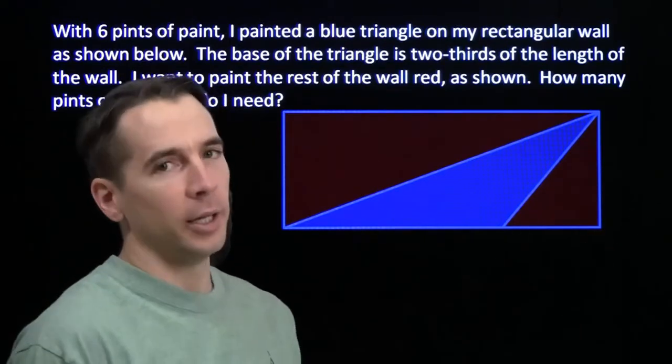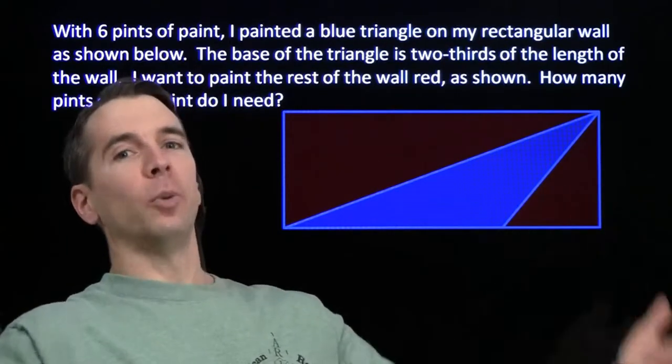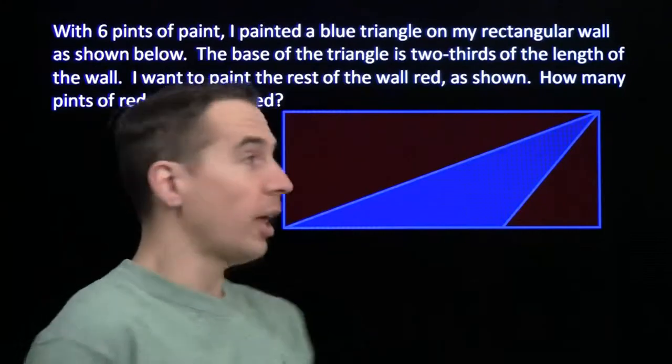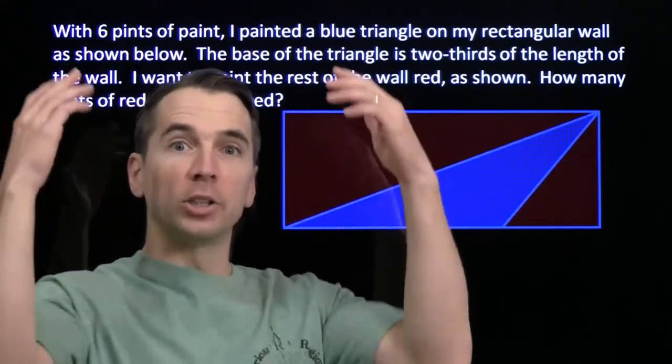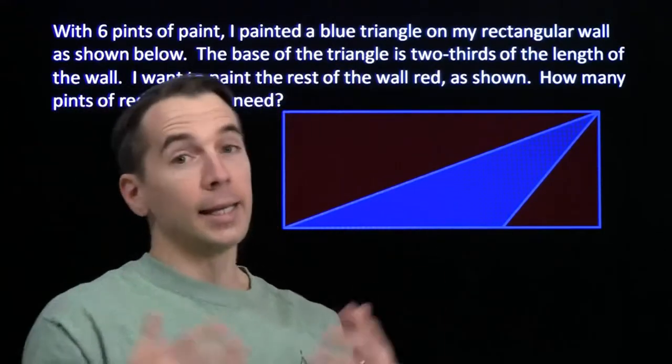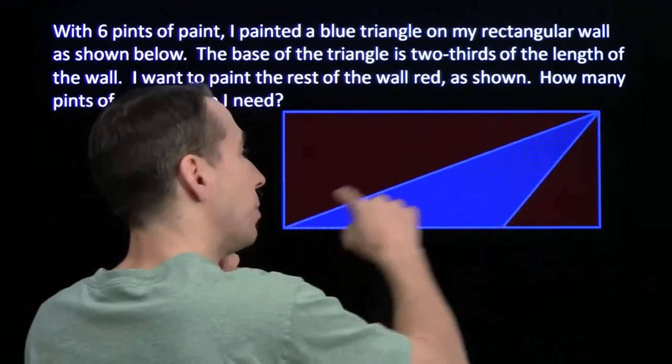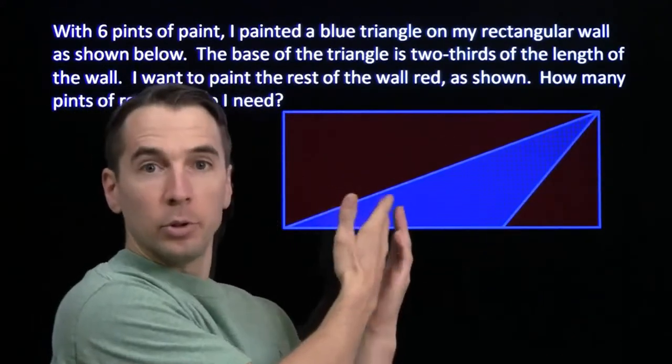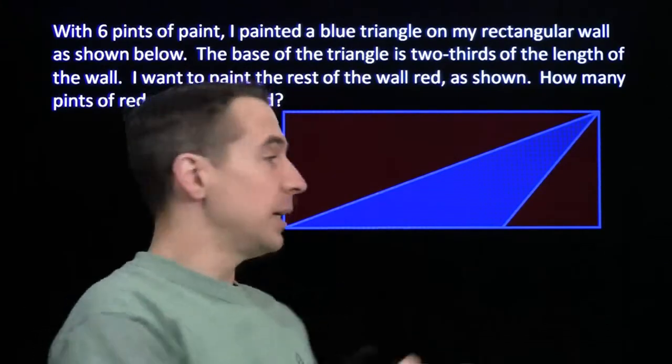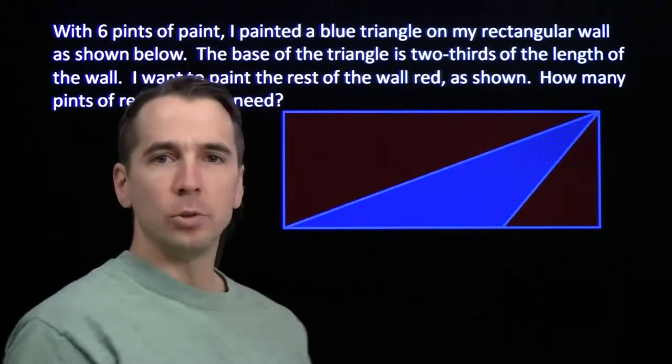Each time I needed a new pint, I went and bought another one. That's a ridiculous way to buy paint, so I don't want to do that for the red triangles. I want to just go to the store once and get the right amount of paint. Now, it took me six pints of paint to paint the blue triangle. How many pints of paint do I need to paint the two red triangles?